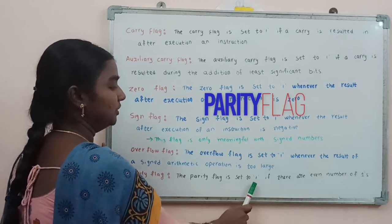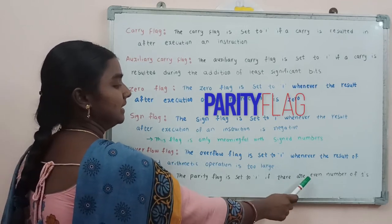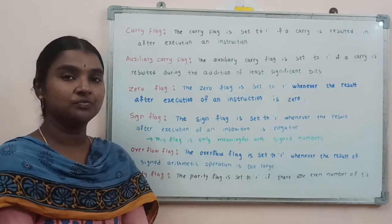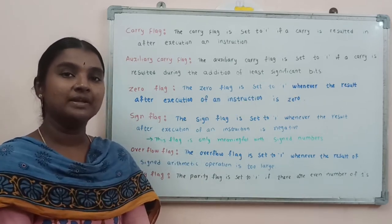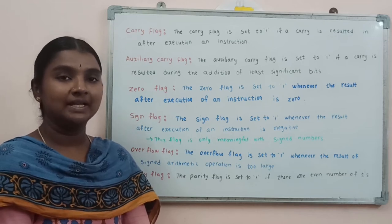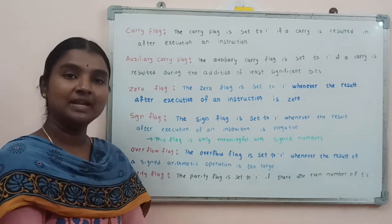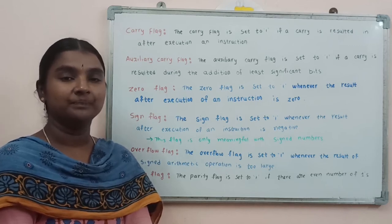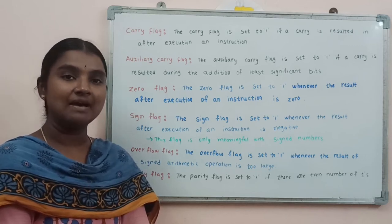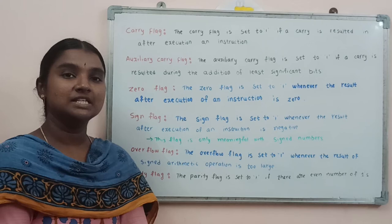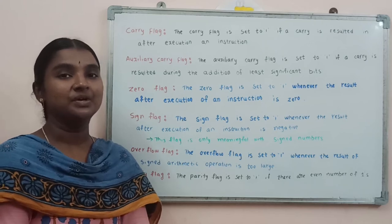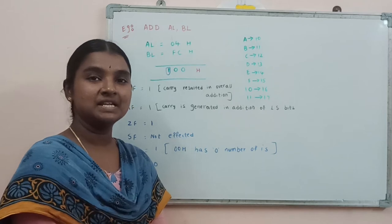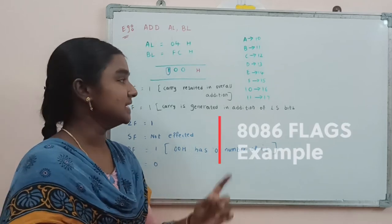The parity flag is set to 1 if there is an even number of 1s in the result. This flag is very useful for error detection when receiving data. If the result has an even number of 1s, the parity flag is set to 1. If it has an odd number of 1s, the parity flag is set to 0. Now we will see how these conditional flags are affected with an example.